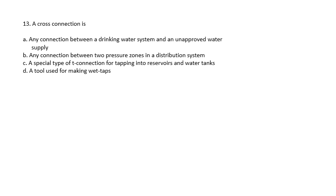Question 13: A cross connection is any connection between the drinking water system and an unapproved water supply, any connection between two pressure zones in a distribution system, a special type of T connection for tapping into reservoirs and water tanks, or a tool used for making wet taps. The answer is any connection between a drinking water system and an unapproved supply.